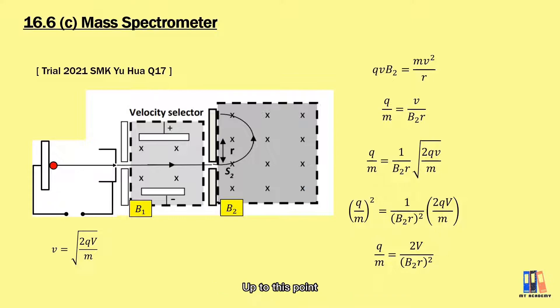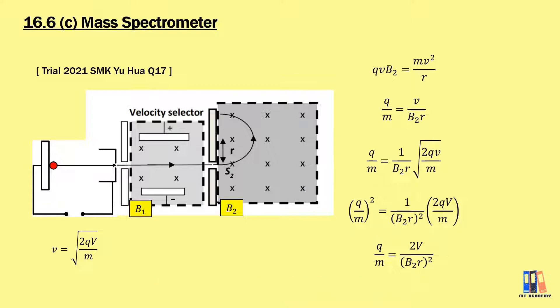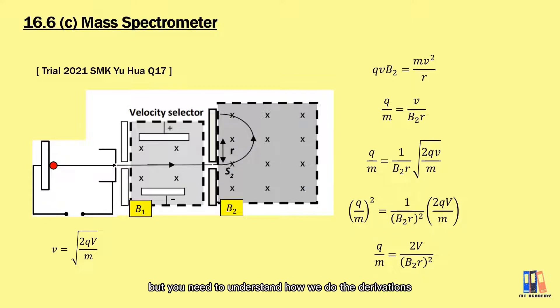So up to this point, we have learned three equations for the charge-to-mass ratio. My advice for this topic is: don't memorize the equations, but understand how to do the derivations.